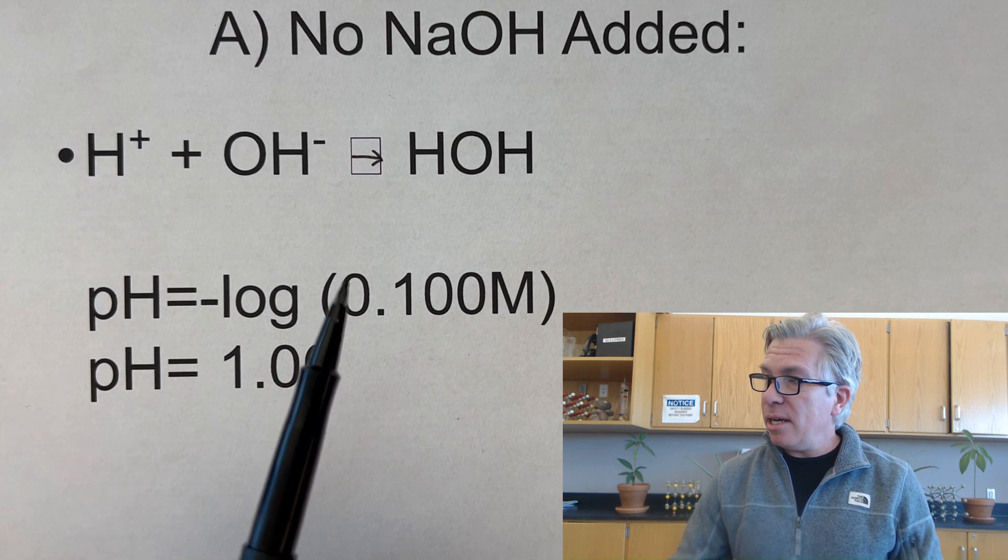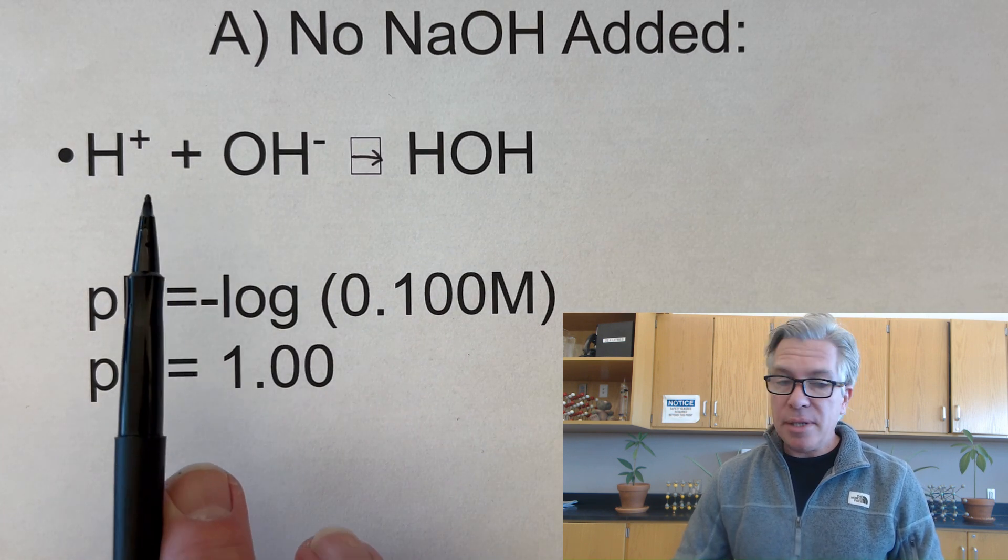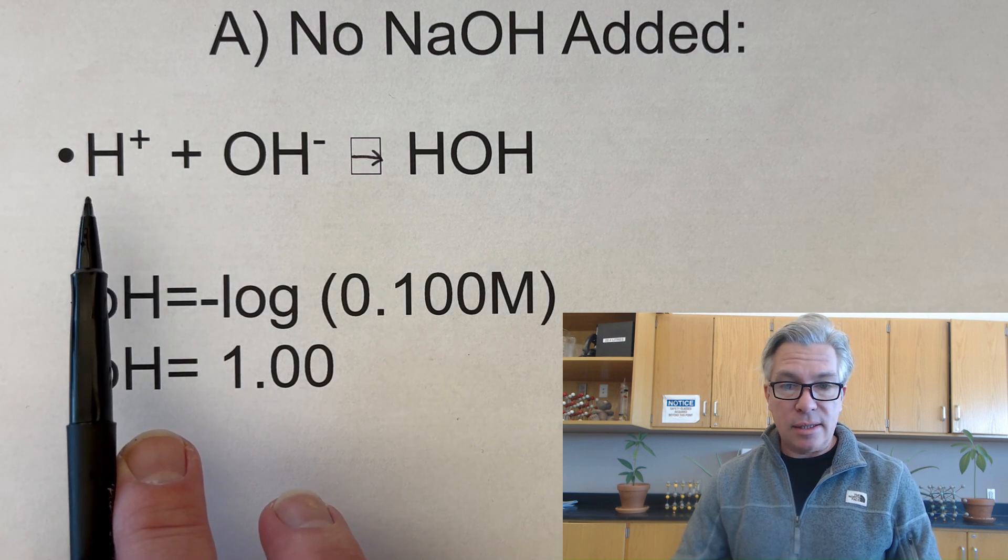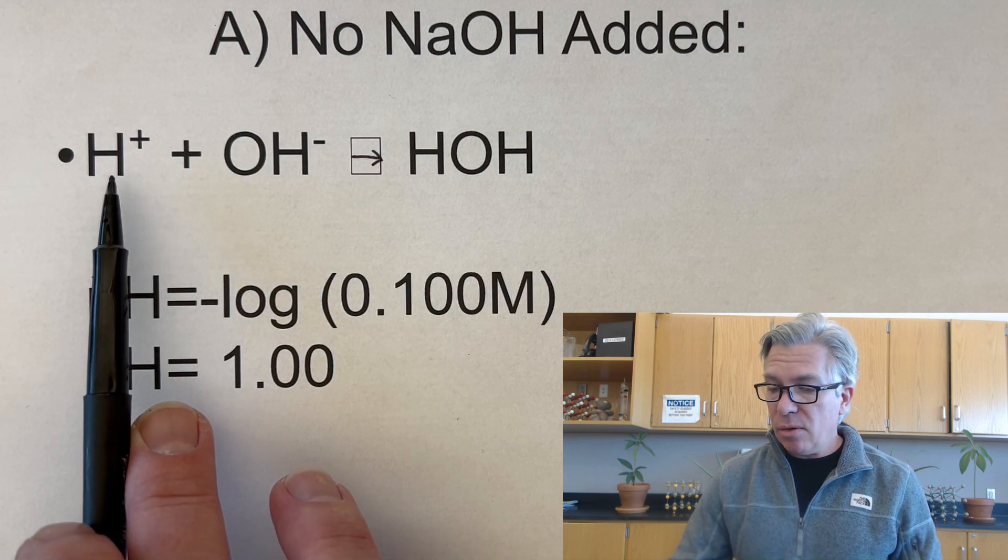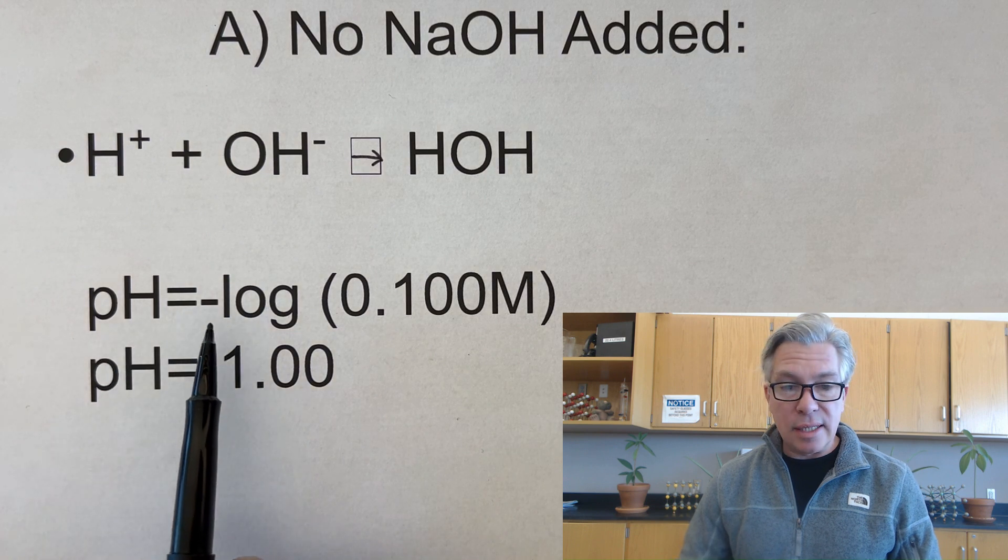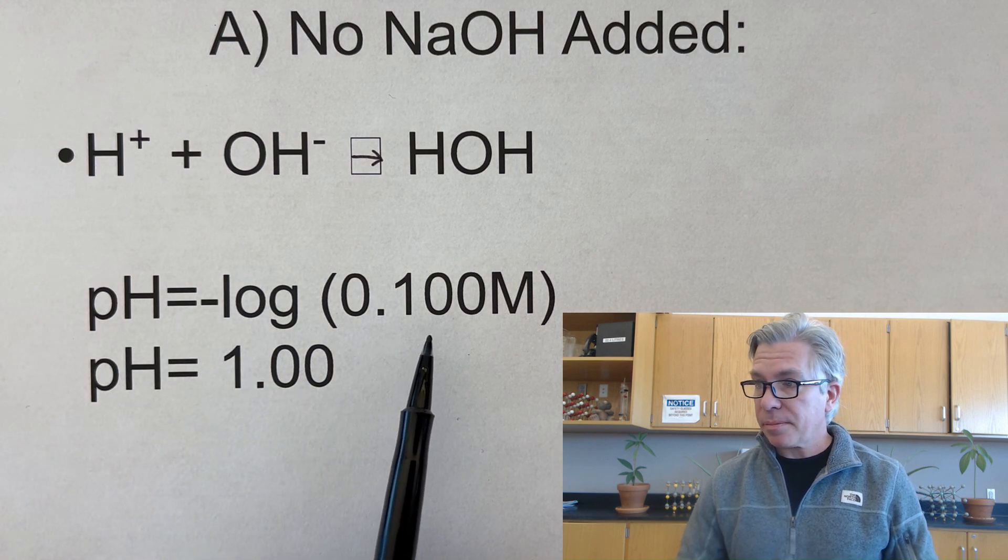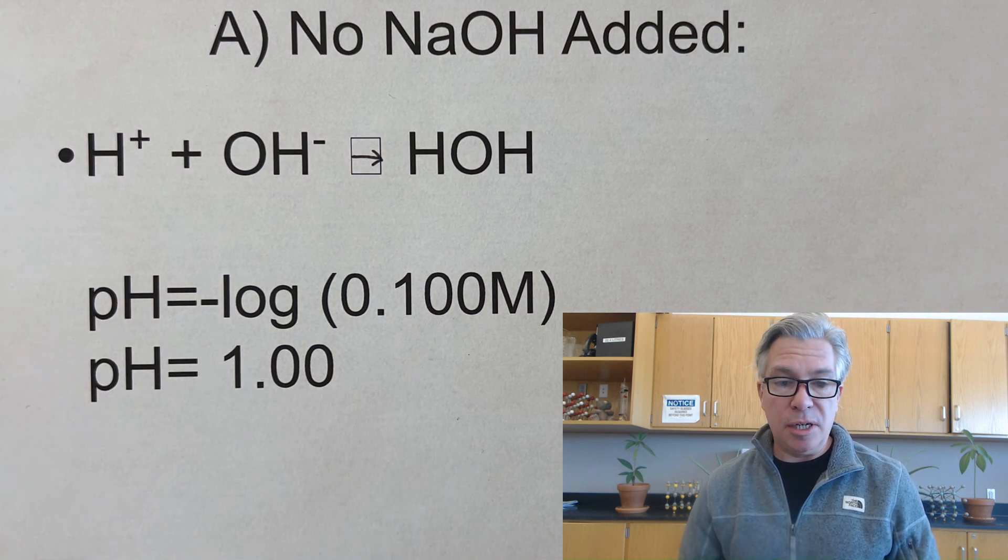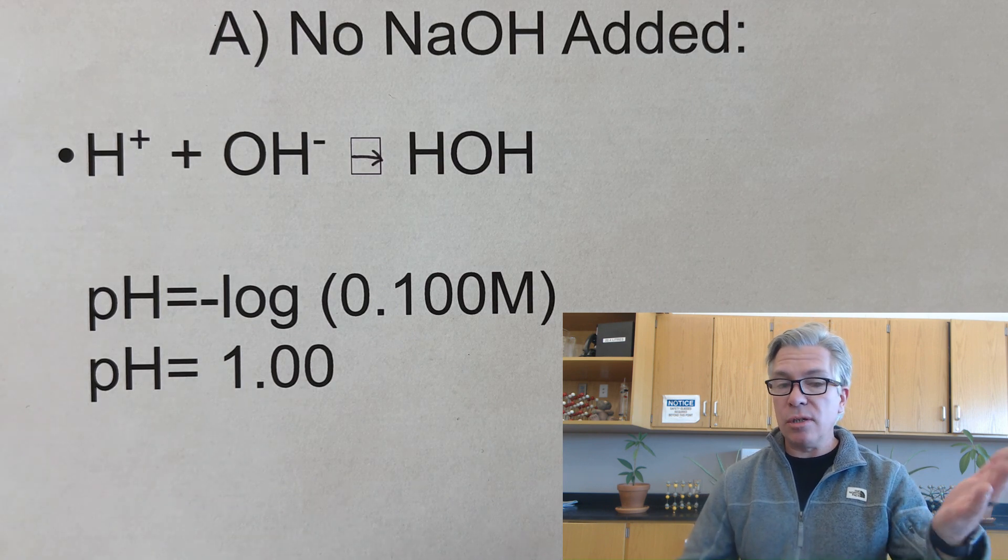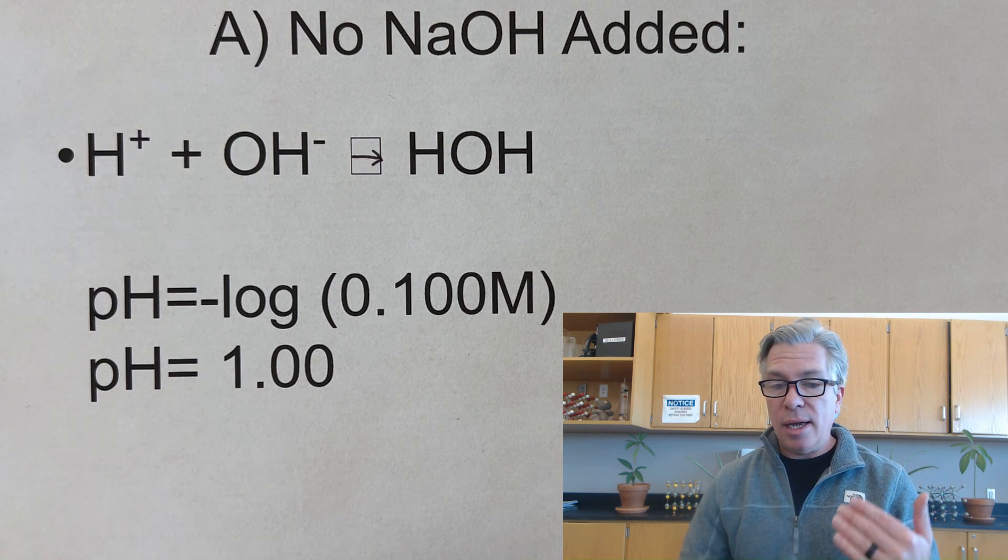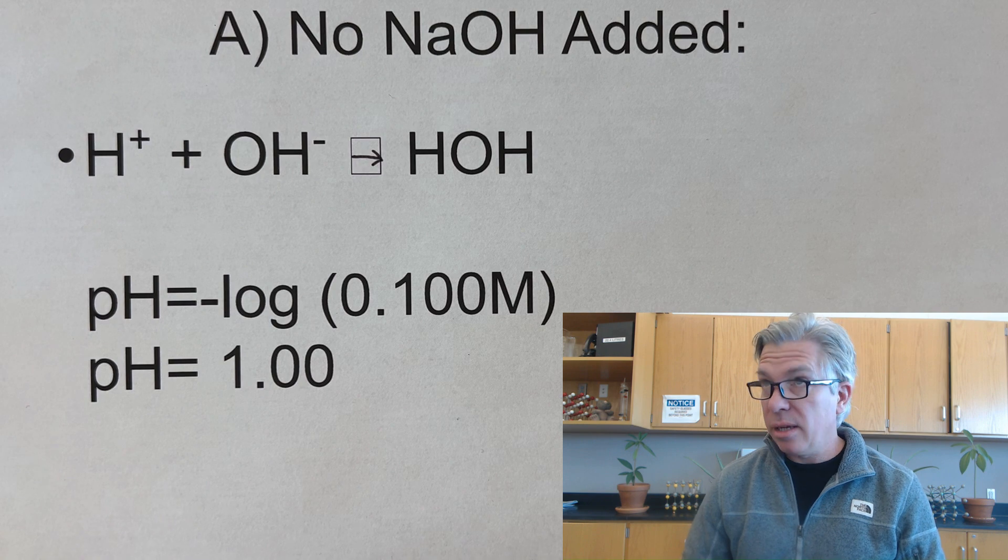Before NaOH is added we simply have a solution of a strong acid hydrochloric acid and so the pH of that solution is just the negative log of its molarity and so that works out to be a pH of 1. So our original solution would have a pH of 1, very low, and my indicator would not have turned pink at that moment.